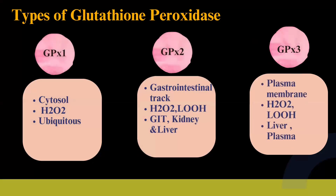Now, the types of glutathione peroxidase. Type 1, glutathione peroxidase 1, is located in the cytosol. Its substrate specificities include hydrogen peroxide and lipid hydroperoxide. Its tissue distribution is ubiquitous, and it functions to maintain redox balance.